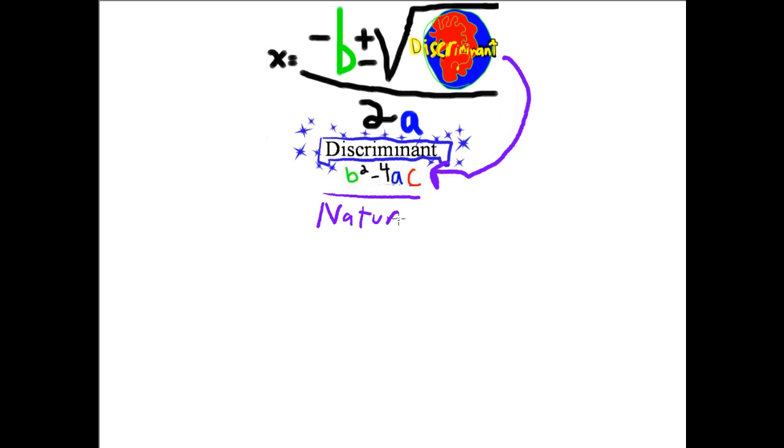The roots of the solutions, the solutions we're going to get. We can actually just look at the solutions and tell what the nature of them are by what numbers they are, but the discriminant will actually tell us about that beforehand.